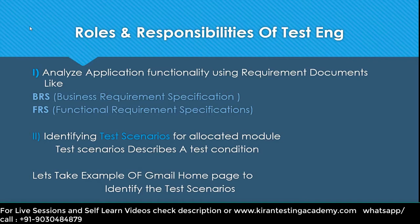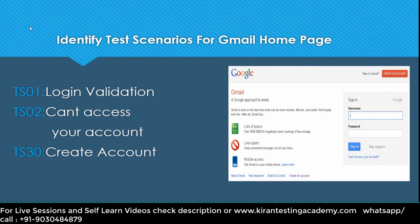After understanding the requirements clearly, we need to derive test scenarios. Test scenarios are nothing but major test conditions. First, identify the major test conditions; from those, you write the test cases. For example, on the Gmail homepage, we can identify three major test scenarios: login validation, accessing your account (can't access your account option), and creating a new account. These are the three major activities we can do on this page.